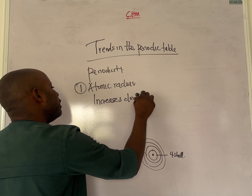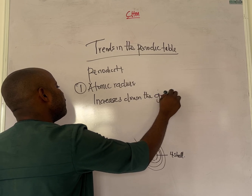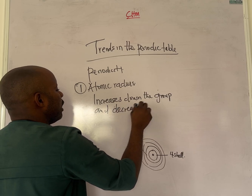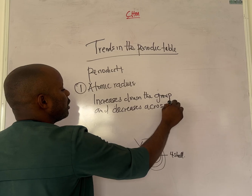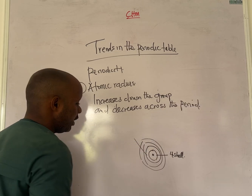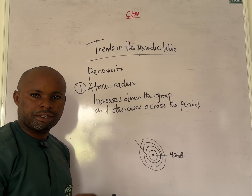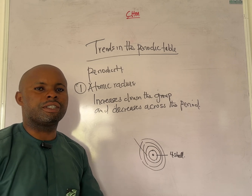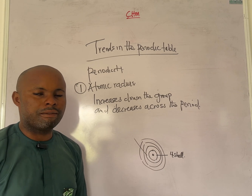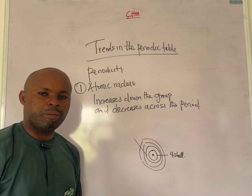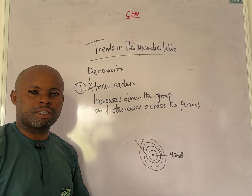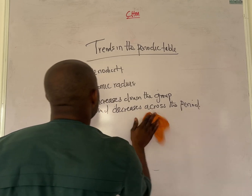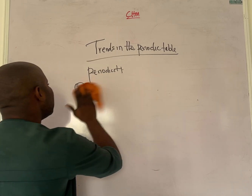Atomic radius increases down the group and decreases across the period. As you go down the group the number of shells increases — from lithium with two shells, sodium with three, potassium with four, and rubidium with five — so the distance between the nucleus and the valence shell increases down the group.